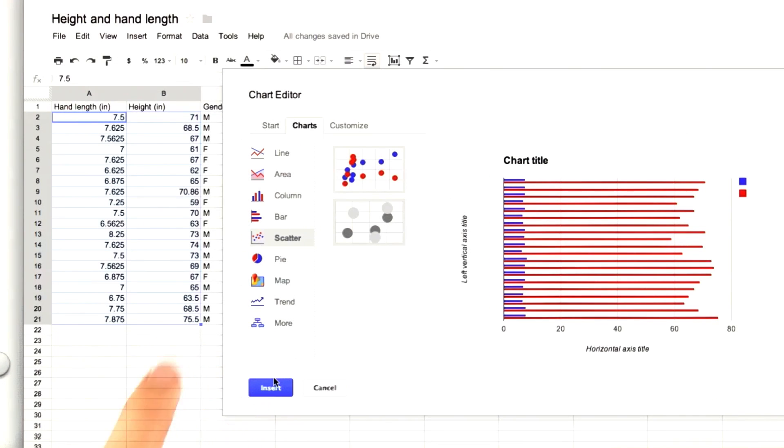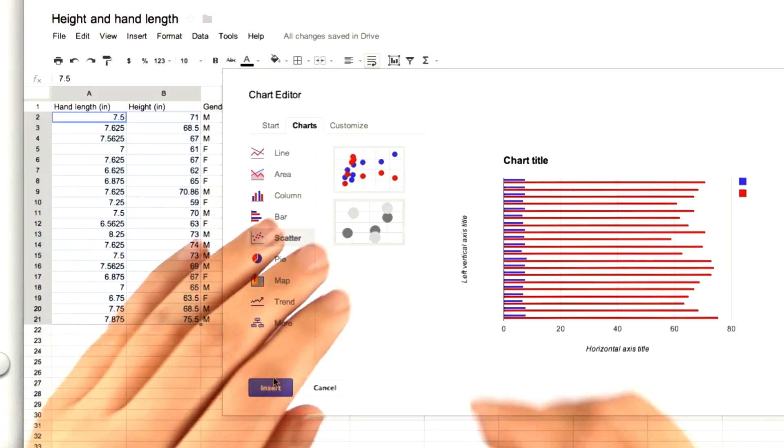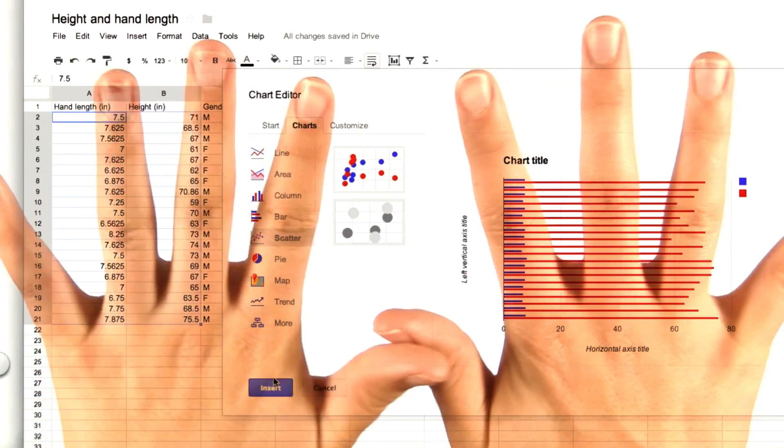After you click insert, a scatter plot should pop up that visualizes this data. You should see a clear relationship between height and hand length.